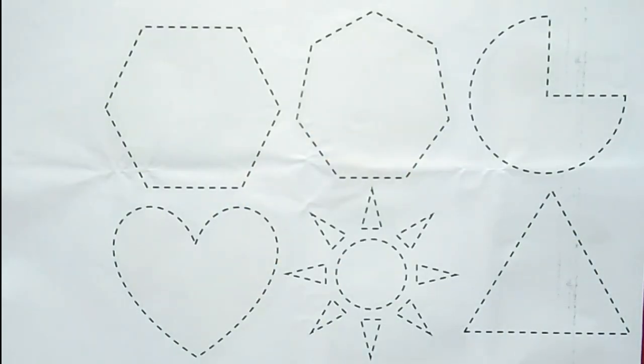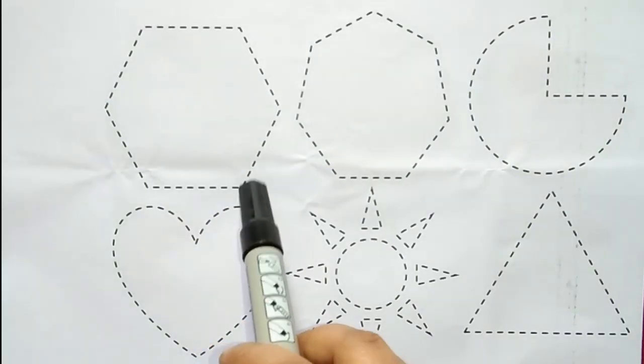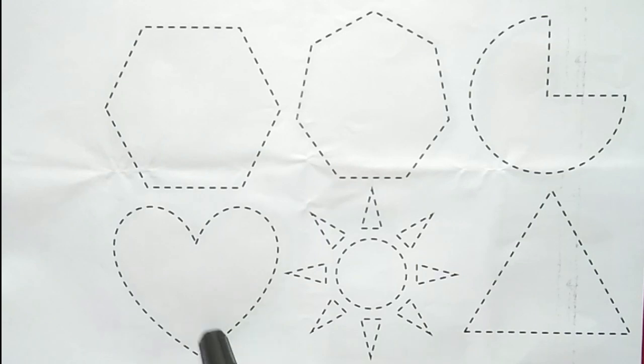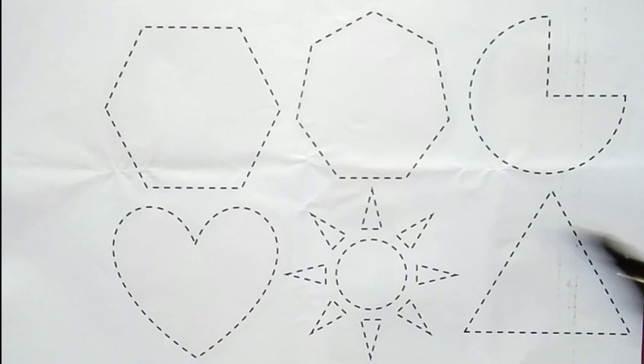Hello kids, today we will learn 2D shapes: hexagon, heptagon, partial circle, heart, sun shape, triangle. Let's draw some 2D shapes with black color.